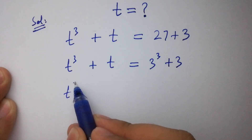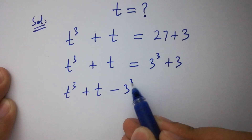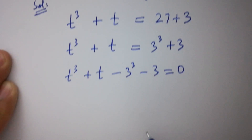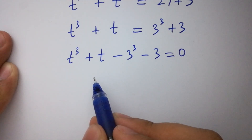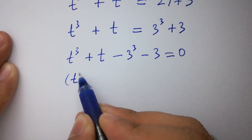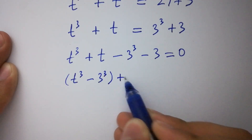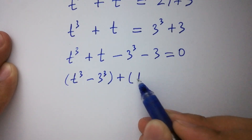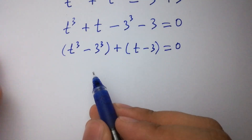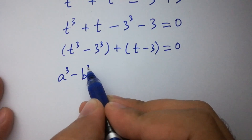We have here t cube plus t minus 3 cube minus 3 equal to 0. By corresponding terms, we can write it as t cube minus 3 cube plus t minus 3 equal to 0.